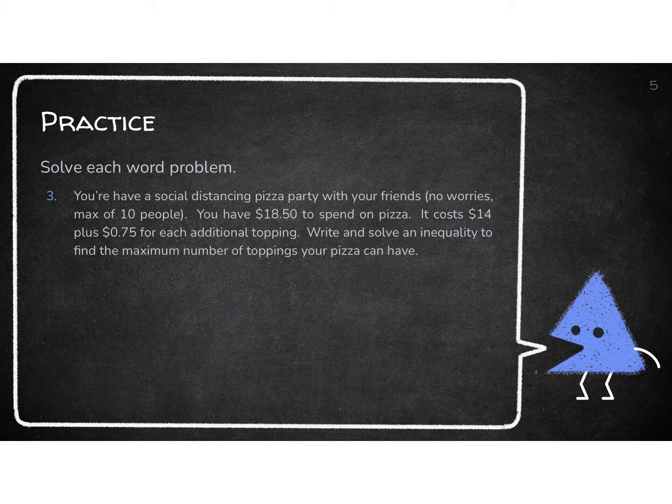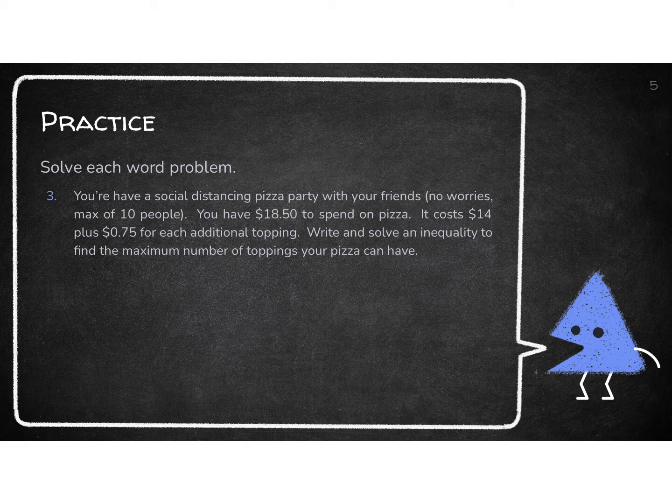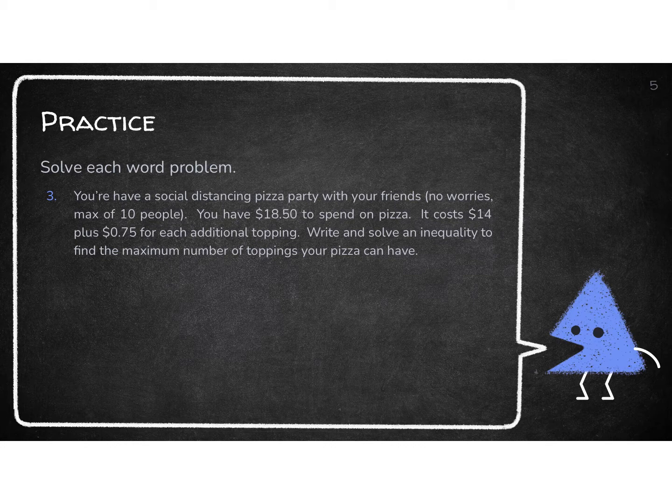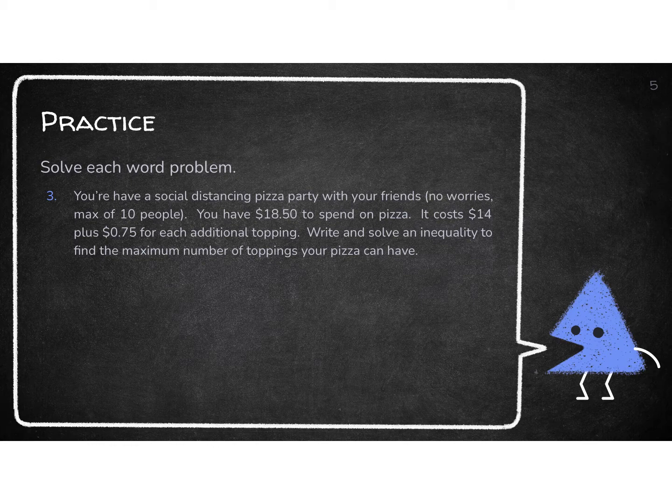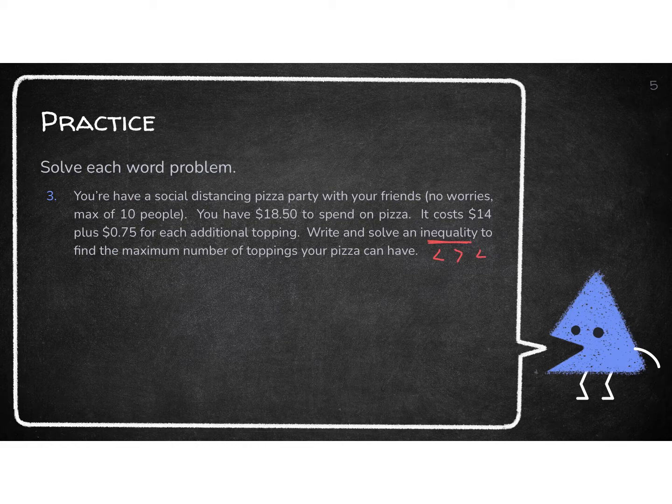All right. So last problem here, you have a social distancing pizza party with your friends. No worries. We're only going to have a max of 10 people. You have $18.50 to spend on pizza. It costs $14 plus 75 cents for each additional topping. We want to write and solve an inequality. So inequality tells me I'm going to have one of my symbols again, right? So what are we starting with?